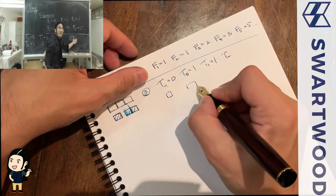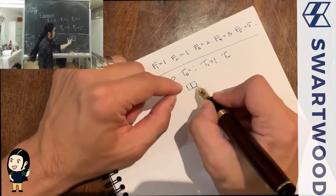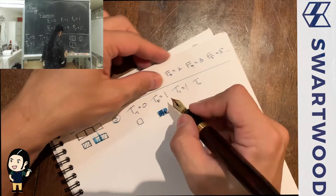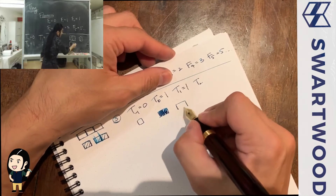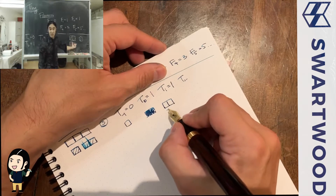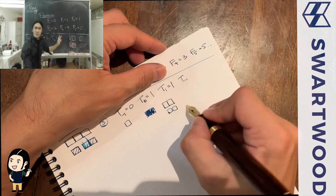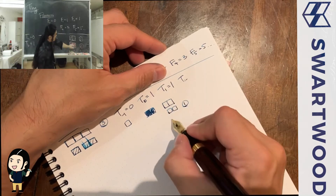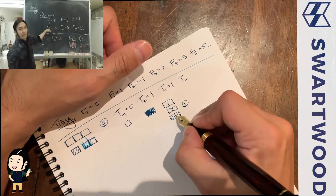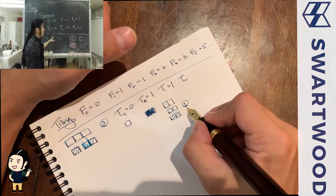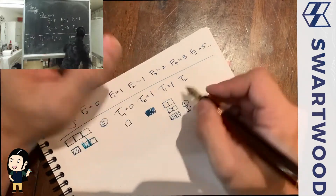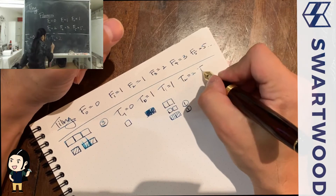How about T(2), a board that looks like this? How many ways can you cover it? Well, there are two ways: you can cover it with a square and then a square — that's one way — or you can cover it with a domino. Those are the only ways to do it, so T(2) = 2.